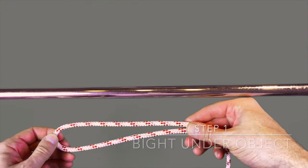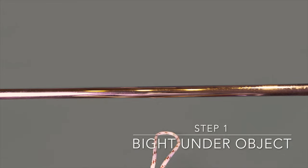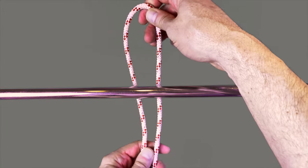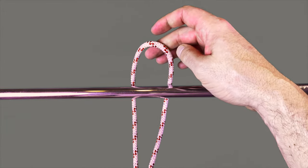To start off the highwayman's hitch, you want to create a bight in the end of your rope, taking it underneath the object you want to hitch around.